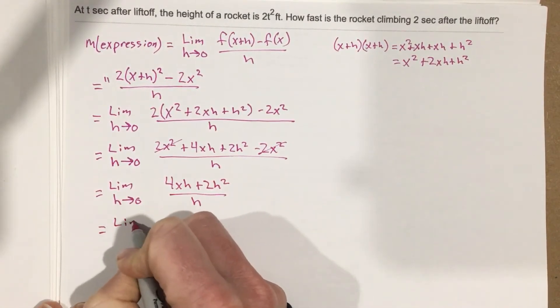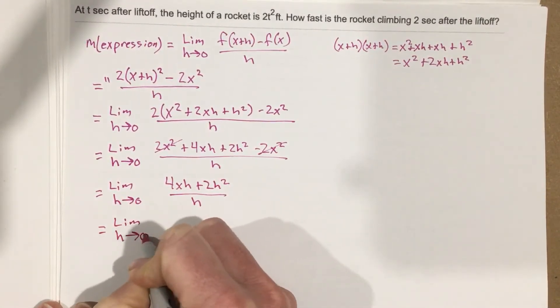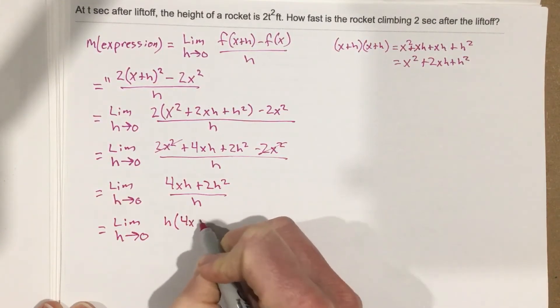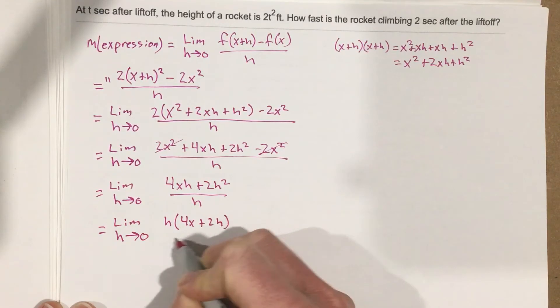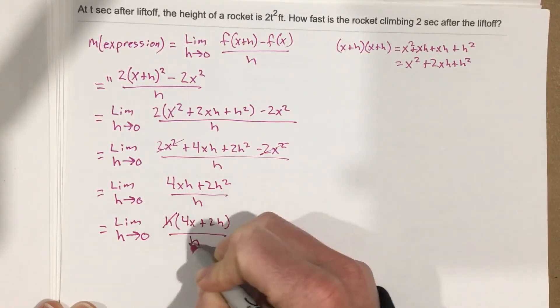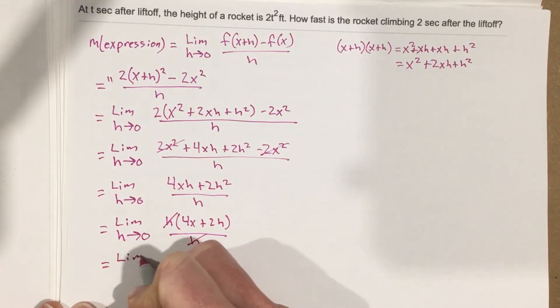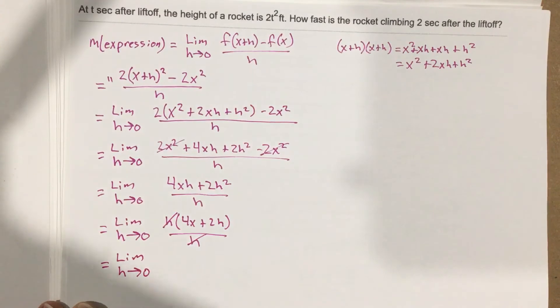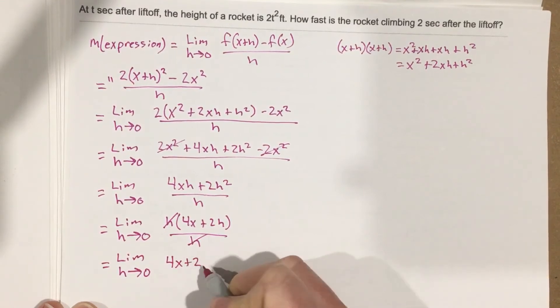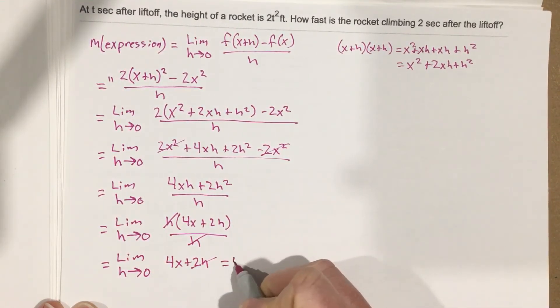We can factor out h from the numerator: 4xh plus 2h squared equals h times 4x plus 2h, over h. We cancel the h's, and we get the limit as h approaches 0 of 4x plus 2h. As h approaches 0, the 2h term goes to 0, so we're left with 4x.